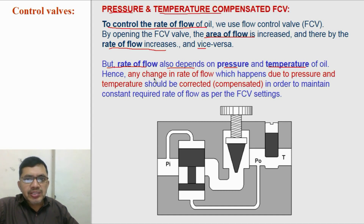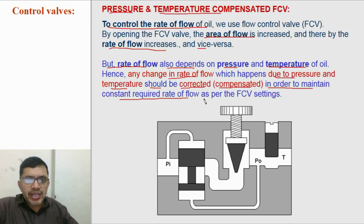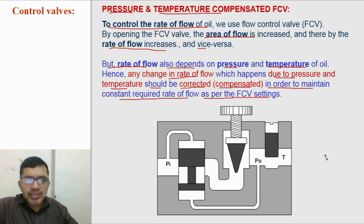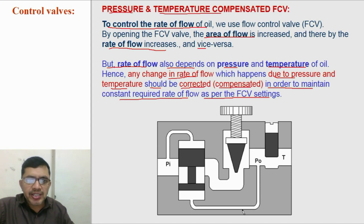Hence, any change in the rate of flow which happens due to pressure and temperature variations should be corrected or compensated, in order to maintain the required constant flow rate as per the flow control valve settings. For example, if we set the flow control valve for a flow of 5 litres per minute, but pressure at the outlet of the pump increases, then the flow rate will reduce to a certain extent.